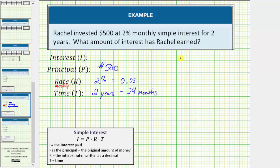Using our formula I equals P times R times T, the interest I is equal to the principal of $500 times the monthly interest rate of 0.02 times the time in months, which is 24 months. So I equals this product, which equals 240.